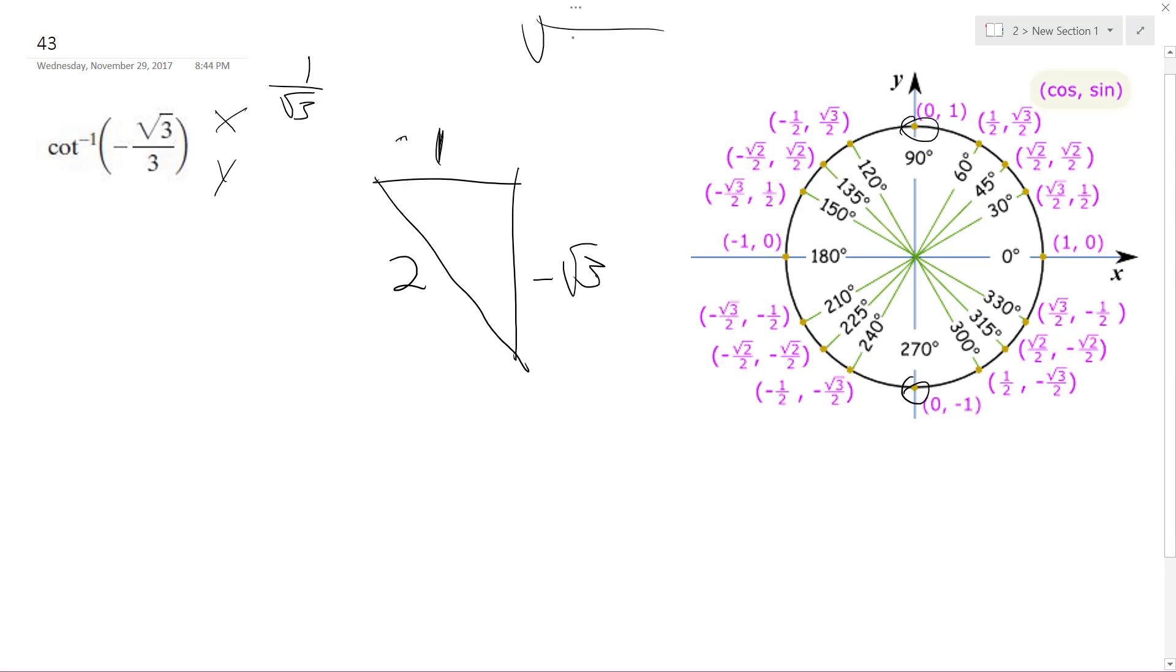So, wow. Square root of 3 squared is 3 plus 1. Alright, 2. Alright, so cotangent.